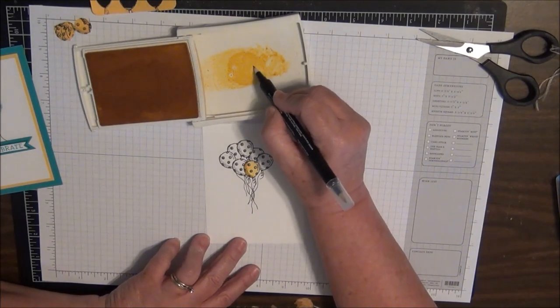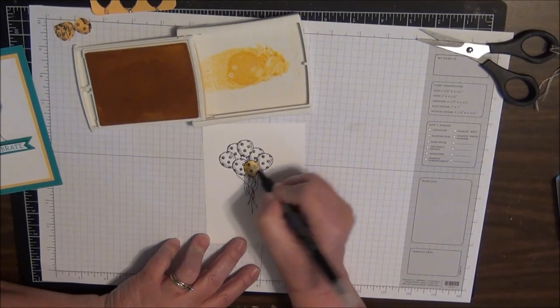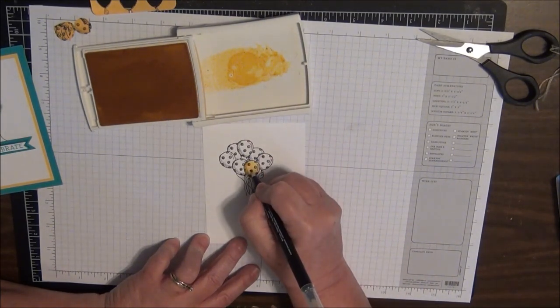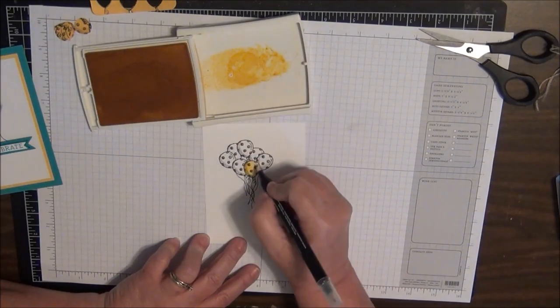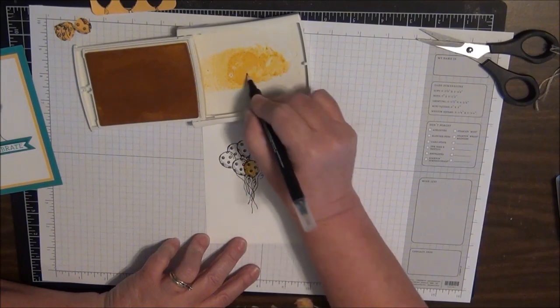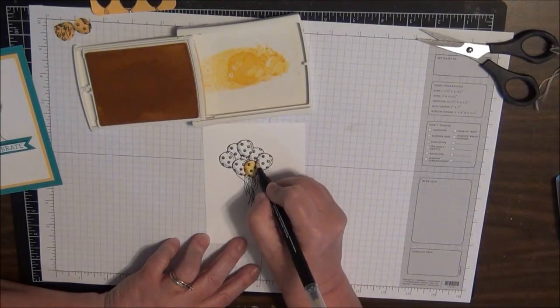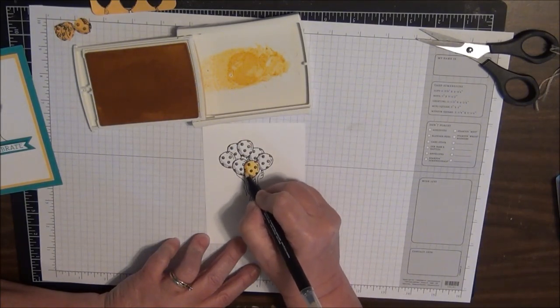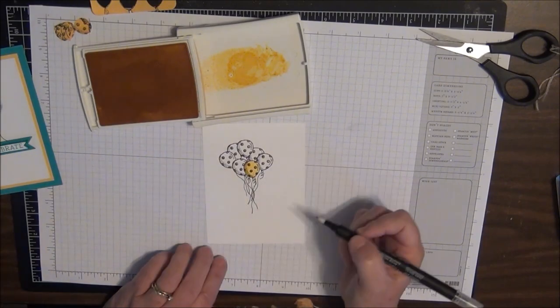Now I want to go ahead and color in my spots on my balloons, and I'm just going to go ahead and do this in Daffodil Delight also. But hopefully because of the image, the way it's done, when I color it, it just instantly makes it look darker.